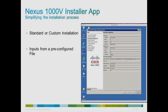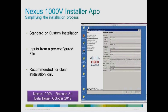It also provides an opportunity for the user to collect relevant information from various stakeholders ahead of the actual installation process. This installer should be used for a clean installation of Nexus 1000v in the data center environment only. This app will be available in the Nexus 1000v release 2.1 and will be ready for beta in October.